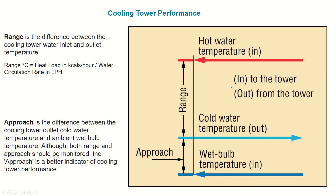In this lecture I will explain how to measure the performance of a cooling tower. The performance of a cooling tower is measured by two parameters which are called range and approach. The range is the difference between the cooling tower water inlet and outlet temperatures. The water entering the cooling tower is hot and the water leaving is cold, so the difference between these two temperatures is called range.